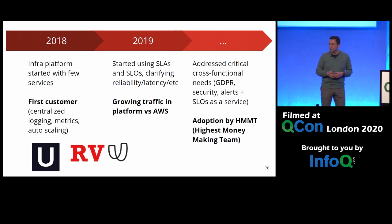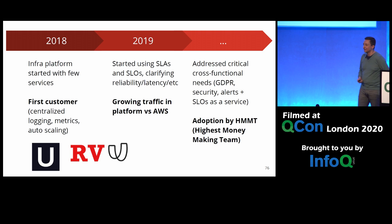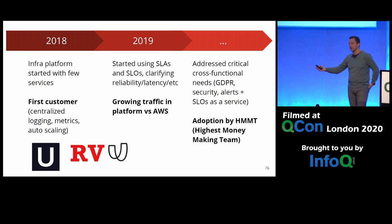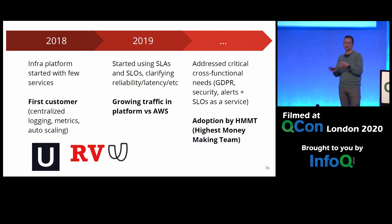Later they addressed cross-functional gaps around security, GDPR, data privacy, and alerts and SLOs. There was clearly a team generating more revenue — the more advanced team in engineering terms — who was already doing everything the platform provided. So there wasn't significant motivation for them to adopt the platform until they realized it provided the same functionality with the same reliability and performance. It no longer made sense for them to do it on their own, so they adopted the platform and had more capacity to focus on the service and the business.